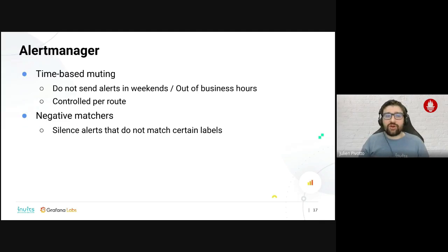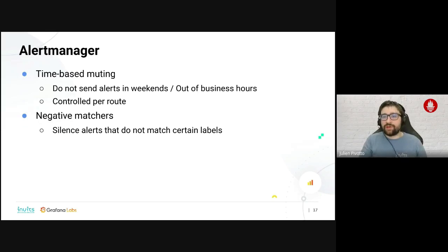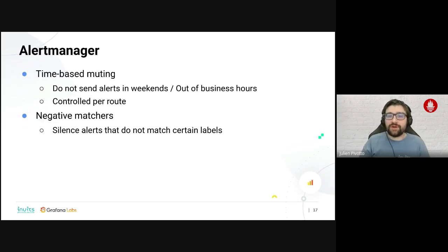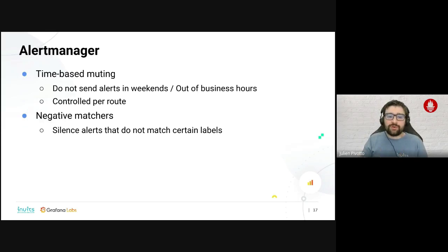Finally, two new features for the Alert Manager. First is time-based muting — you can now decide directly in Alert Manager that certain teams should not receive certain alerts during weekends or outside business hours, and you can control that per route. Previously that required work in PromQL or in front-ends; now it's directly in Alert Manager. The second feature is negative matchers — you can create a silence that matches alerts that do NOT match certain labels, for example putting everything except production into silence.